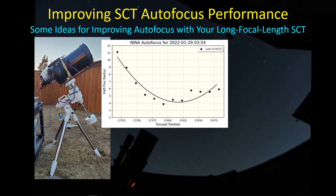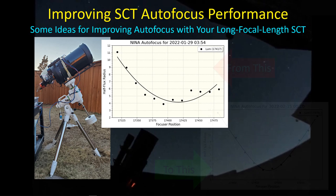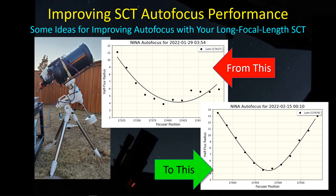Hey guys, welcome back. This is a follow-up video to one I made a while ago where I was talking about some of the inconsistent results I was consistently getting when trying to use NINA and the autofocus routine with my SCT at full focal length with no focal reducer in the chain. Now that I've been out doing some testing and have changed some parameters, I wanted to share what I did to go from that bad curve to a good curve on a consistent basis.